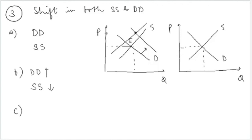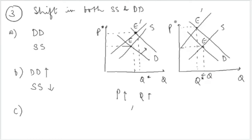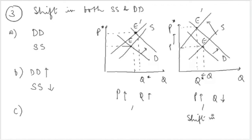There are two possible cases. In the first case, at the new equilibrium, both prices and quantity have increased. This occurs when the demand curve shifts more than the supply curve. In the second case, prices have increased but quantity has decreased — this happens when the supply curve shifts more than the demand curve. The difference between the two outcomes is primarily determined by the relative intensity of the shifts in each curve.